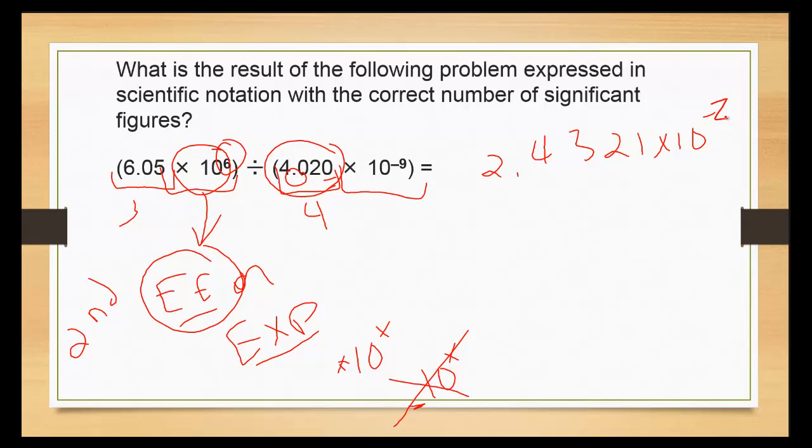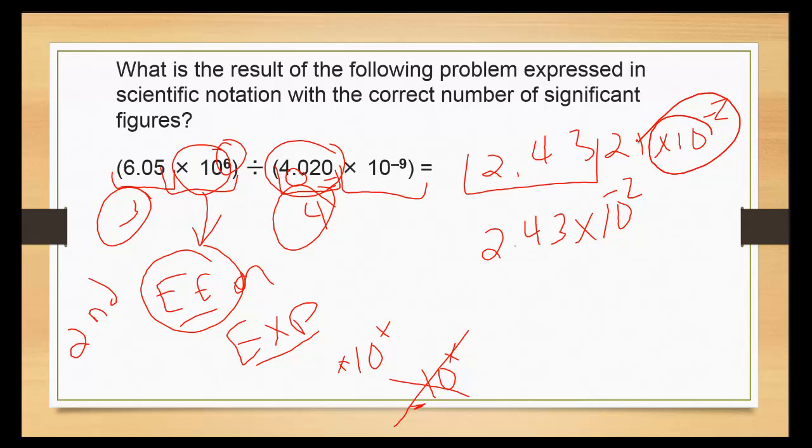Now let's go back and look at our significant figures. The first one only has three significant figures. The second one has four. So therefore, I want to take the first three numbers. My final answer is going to be 2.43 times ten to the negative two. That times ten to the negative two stays while the other numbers drop out.